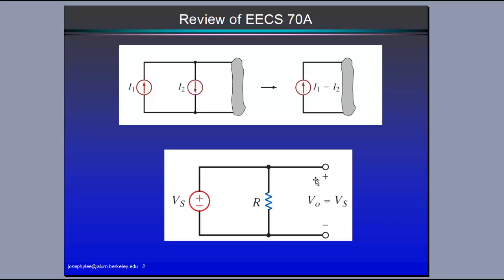Here I'm going to review Kirchhoff's current law — that is, the current that goes in equals the current that goes out. So when you add and subtract the current sources I1 and I2, you basically subtract each other, which is I1 minus I2. And the open circuit voltage right here is basically the voltage drop of the voltage current source on the left.